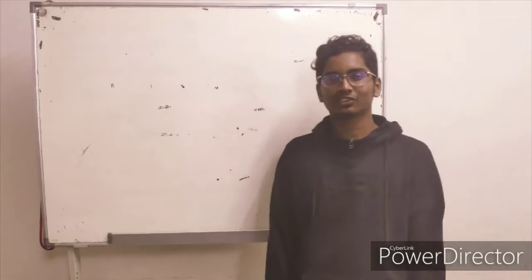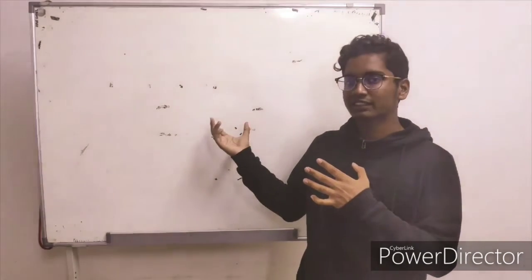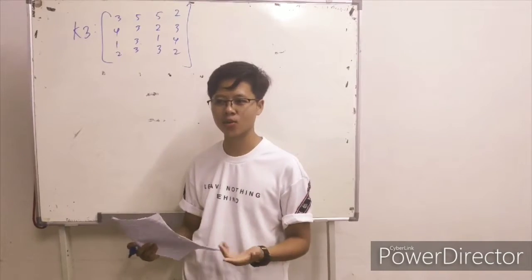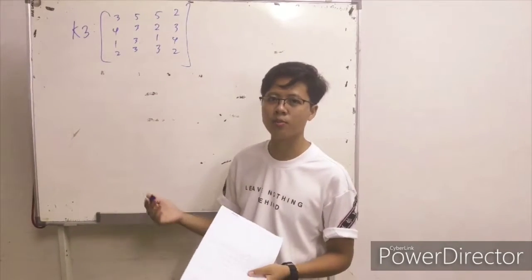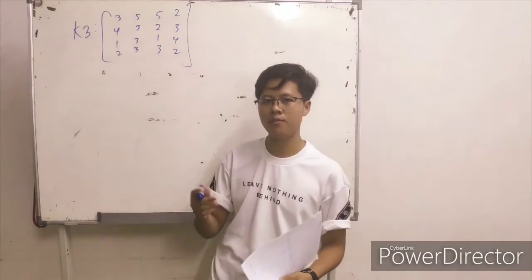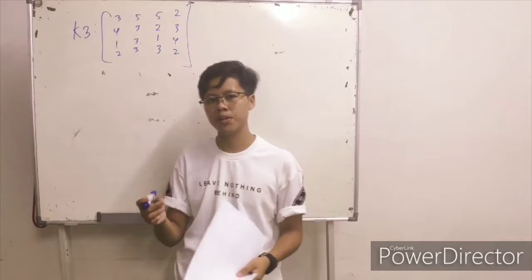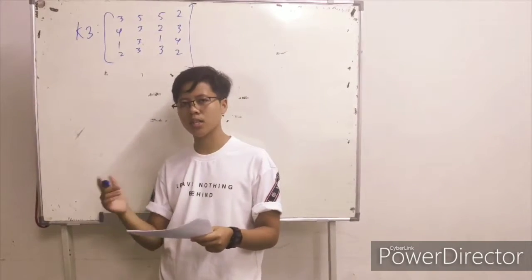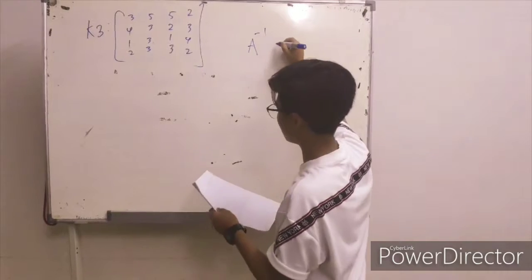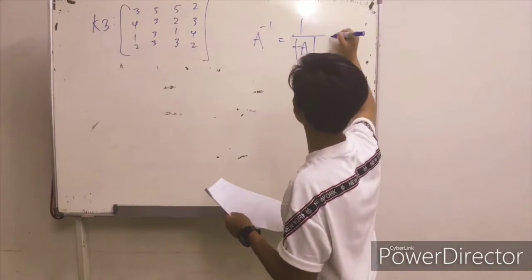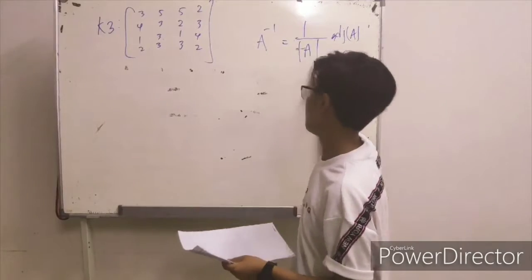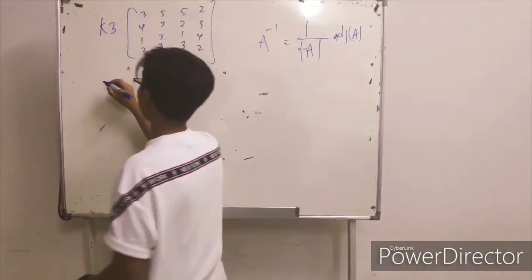Okay, so now I will be passing to Shazrena to continue and check the inverse using adjoint method. Okay, so for the last one for K3 we will use adjoint. So first we need to get the message so inverse must match with P. We need to find the inverse formula which is 1 over determinant with the adjoint. Okay, so first we find the determinant so determinant A equals.